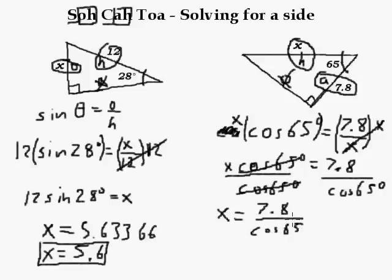So X is equal to 7.8 divided by cos 65. Now I'm going to have to punch this into my calculator again. I'm going to punch in 7.8 divided by 65 cos equals, and I get X equals, and I'm just going to round it this time. 18.5. There's my next X.